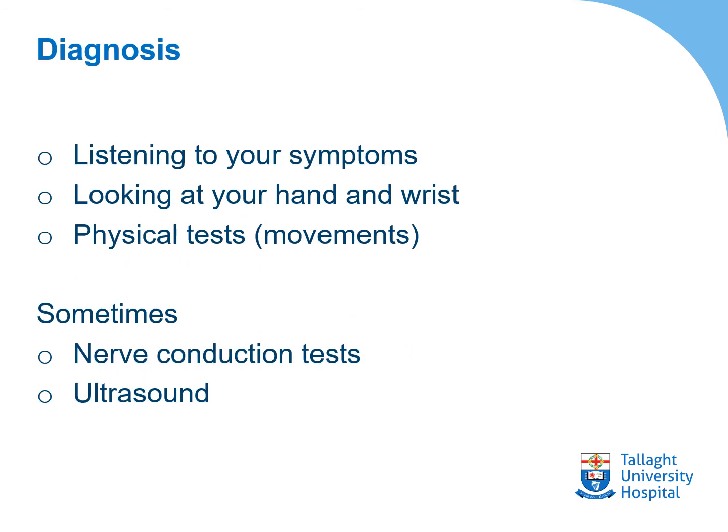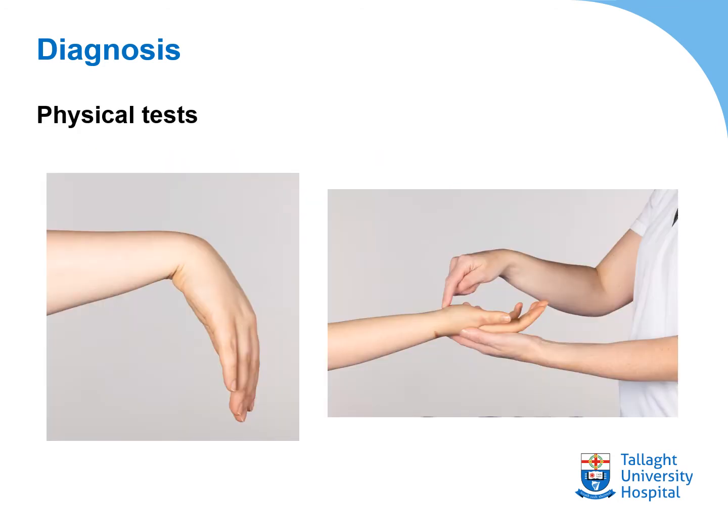How do we diagnose it? Usually it's just by listening to your symptoms, looking at your hand and wrist, and looking at where you're telling us you're having these symptoms. We can do physical tests or specific movements that can help us to diagnose carpal tunnel syndrome, and sometimes your medical team may send you for special tests like nerve conduction tests or ultrasound to help with the diagnosis. These are examples of some of the movements we may get you to perform.